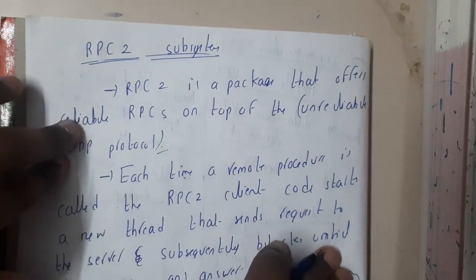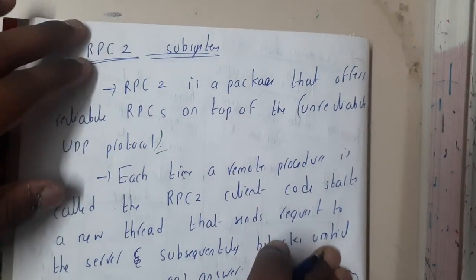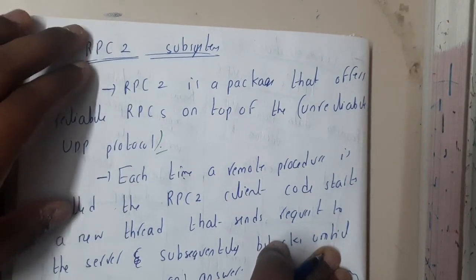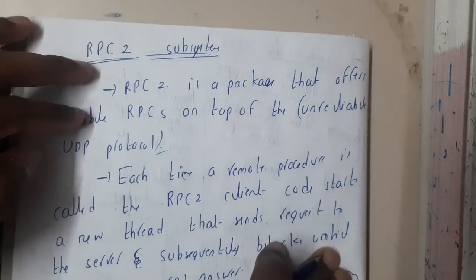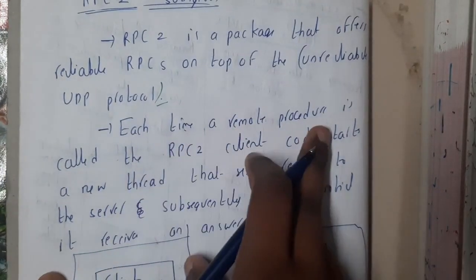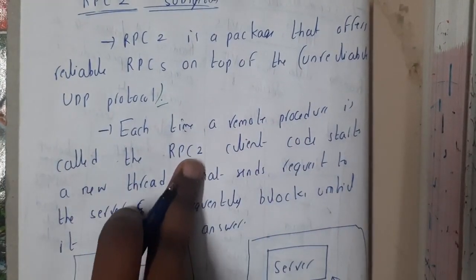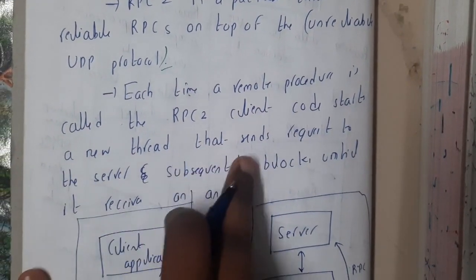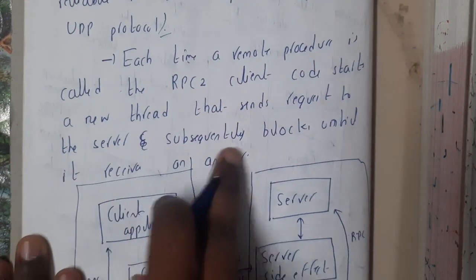That is the reason why whenever you are using UDP you will be using RPC2 rather than RPC. RPC2 is some kind of extension which increases the reliability of RPC. Each time a remote procedure call is called, the RPC2 client code starts a new thread that sends the request to the server, subsequently blocks until it receives the answer.